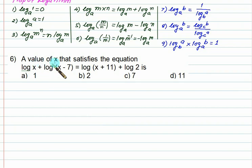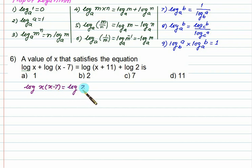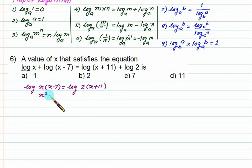Find the value of x that satisfies the given equation. We can write the first two terms as a product: log of x into (x minus 7). The second term we can write as a product: log of 2 into (x plus 11). Expanding this, we eliminate the log and get x squared minus 7x equal to 2x plus 22.